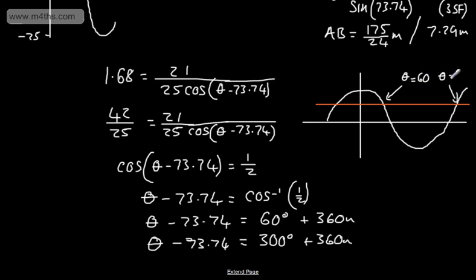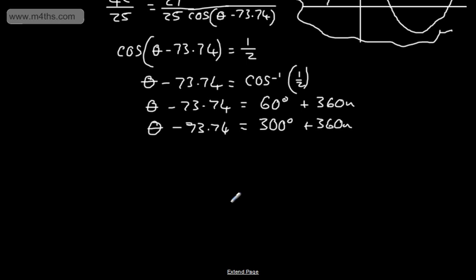We've got theta is going to be equal to, at principal values, as such. Theta is going to be here at 300, and then we're going to have this one right here. We're going to have theta is going to be equal to minus 60. This is just the standard cosine curve, rather than I'm not relating it to the question, as such.